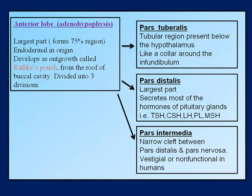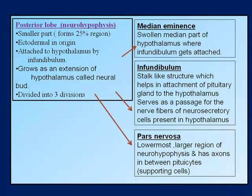The anterior lobe (adenohypophysis) is the largest part of the gland, forming 75% of the region. It is endodermal in origin, developing as an outgrowth called Rathke's pouch from the roof of the buccal cavity. It is divided into three divisions: pars tuberalis (a tubular region present below the hypothalamus like a collar around the infundibulum), pars distalis (the largest part, which secretes most pituitary hormones: TSH, GH, LH, PL, MSH), and pars intermedia.